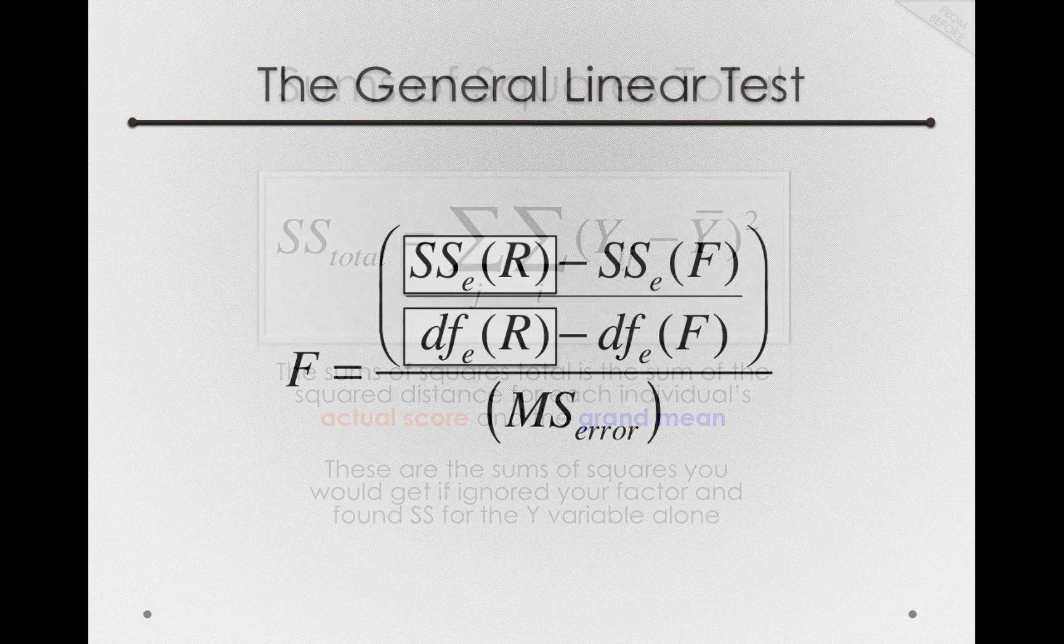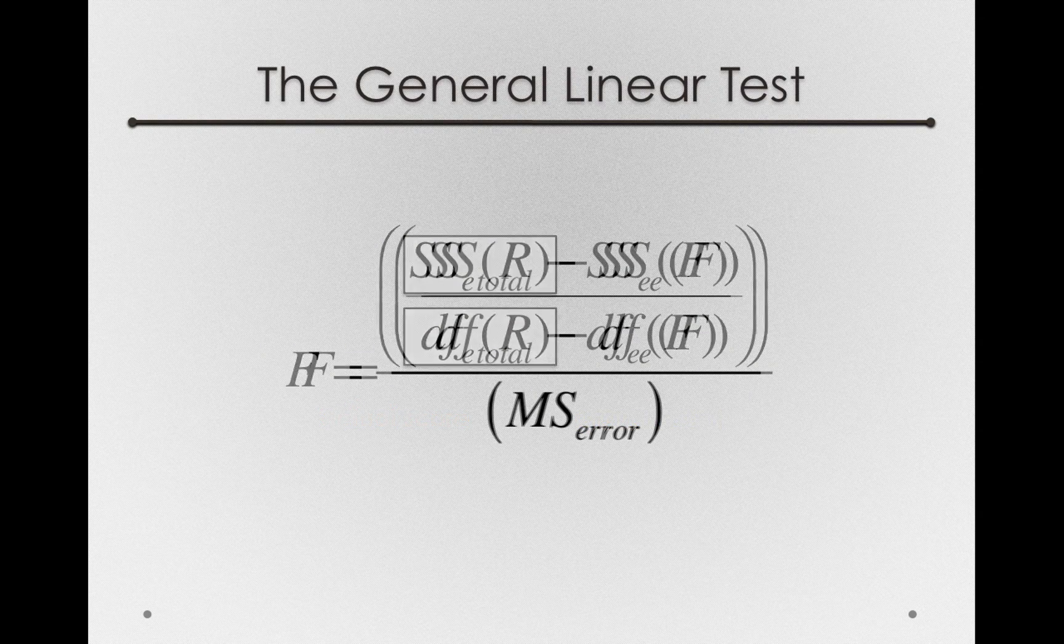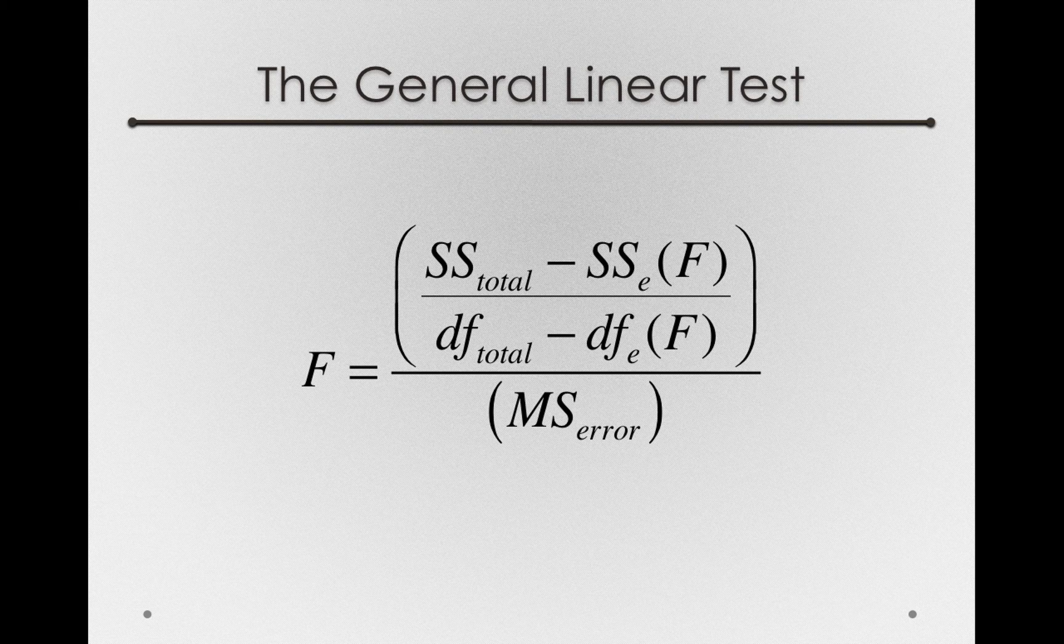So the sums of squares error for the reduced model is really just sums of squares total and degrees of freedom total.